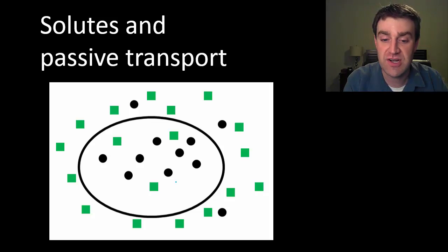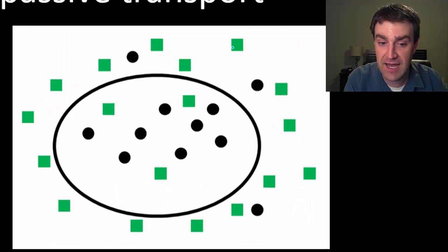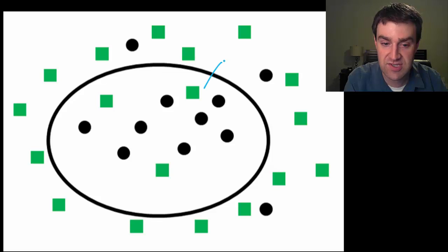What I'm trying to show here is that maybe the green squares, if their high concentration is outside, they'll move from high to low into the cell.